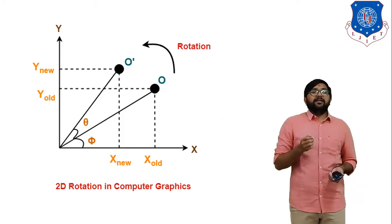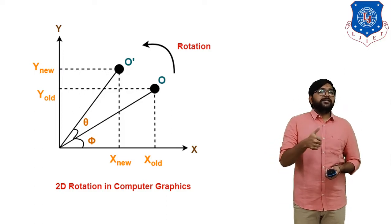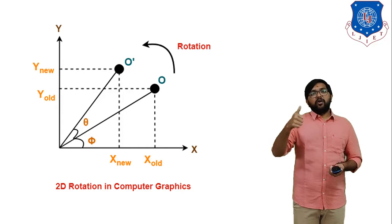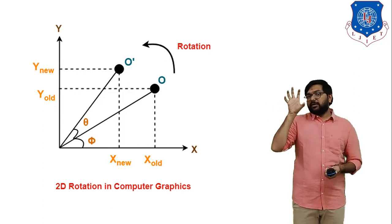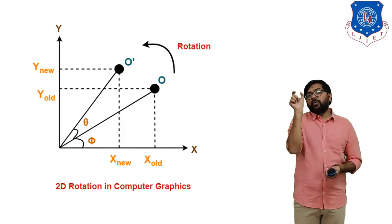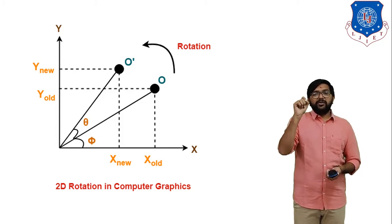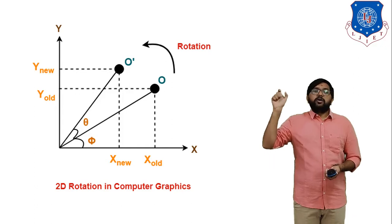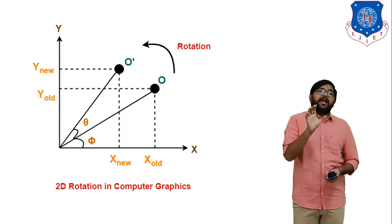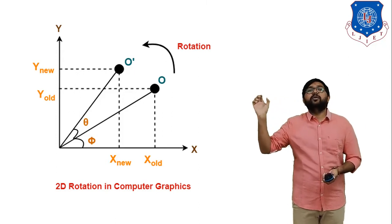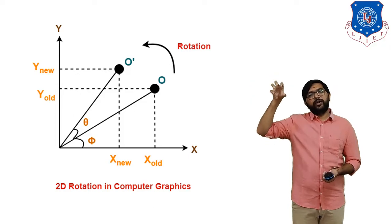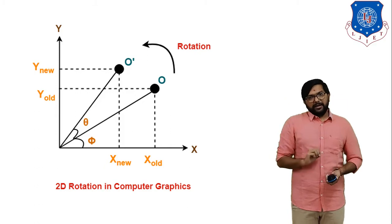We use the trigonometric identities: cos(α + β) = cos α cos β − sin α sin β, and sin(α + β) = sin α cos β + cos α sin β. Applying the cos identity: x_new = R cos(θ + φ) = R(cos θ cos φ − sin θ sin φ). Multiplying R inside gives R cos θ cos φ − R sin θ sin φ. Substituting x_old = R cos φ and y_old = R sin φ, we get the equation for x_new.